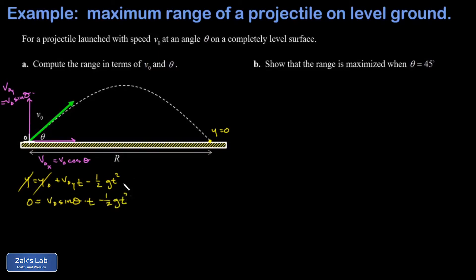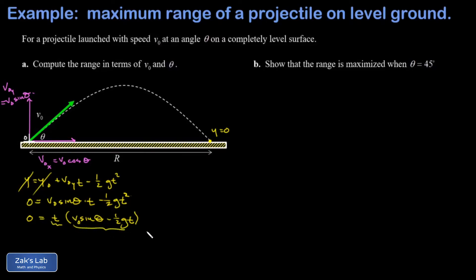We're leaving G symbolic — not plugging in 9.8 — because we're trying to get a general solution. This is a factorable quadratic: I pull a T out and get T times the quantity (V₀ sine theta minus one-half G·T). I get a solution when either factor equals zero, because zero times anything is zero.